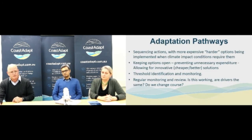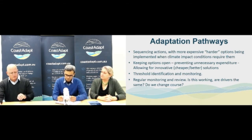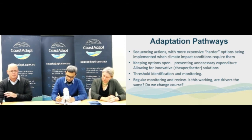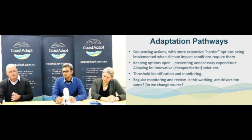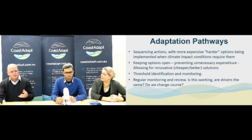Adaptation pathways is really about sequencing your actions — deriving a map. Once you've identified all your options, you work out what you should do first: the most cost-effective option with win-win outcomes right away, versus those that are harder and perhaps more difficult later on. You might want to wait until you're really sure about the effects of climate change before implementing those options. Waiting also allows new innovative solutions to emerge from your communities or from others around the globe.